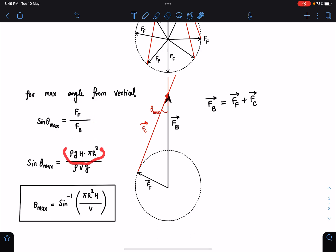So I know the FF value: pressure at center into area of it, ρgh into πr², and buoyant force is ρVg. So this θ max comes as sin inverse πr²h by V. So this is a general result and till now in this result I haven't discussed anything about the body.